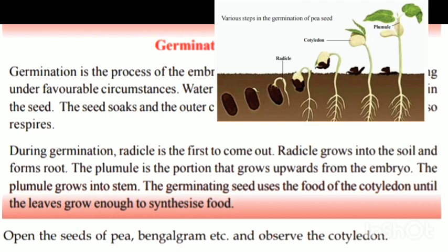The plumule is the portion that grows upward from the embryo. The plumule grows into the stem.